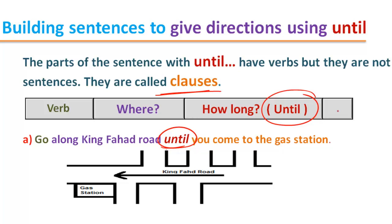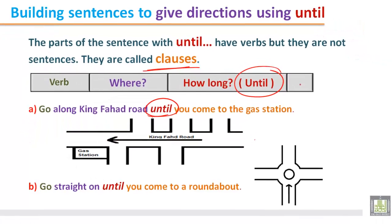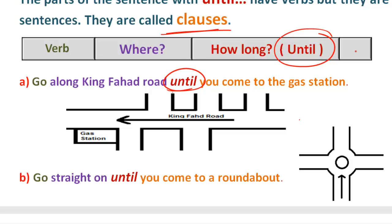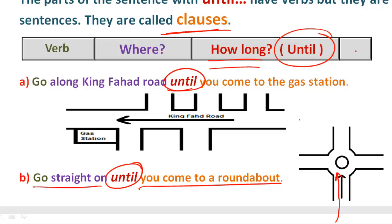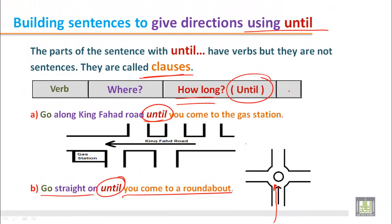Example b: 'Go straight on until you come to a roundabout.' You are coming from this way, and the instruction tells you how long you should drive — until you come to a roundabout. These are two parts joined by 'until,' but here we are giving instructions using 'until,' not simply joining sentences.